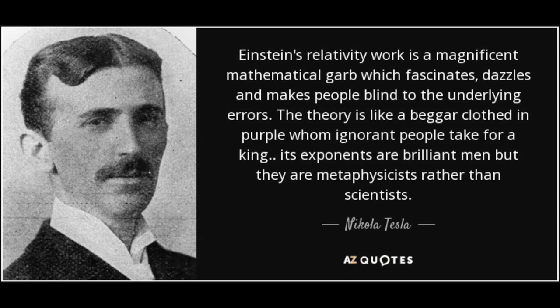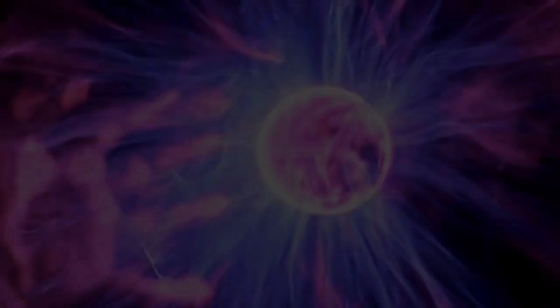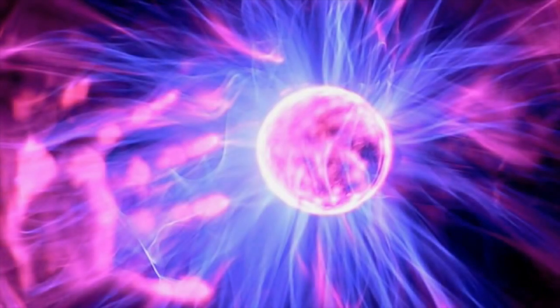So, if gravity doesn't exist, then what's the force that pulls us down to the earth? Why do things fall down instead of up? The answer is electromagnetism. Researcher and author Anthony Patch states, In short, the accurate model of the mechanisms governing the functioning of our known universe is that of electromagnetism, not gravity.